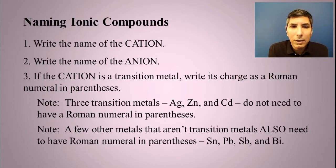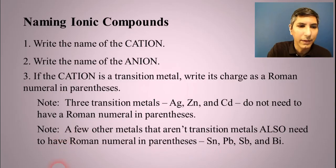And they will need to have the Roman numeral in parentheses. These are generally speaking, if you look at your periodic table, the metals that are kind of squished between the transition metal area and the metalloid line. So that would include elements such as tin, lead, antimony, and bismuth. So we'll have some examples of that.